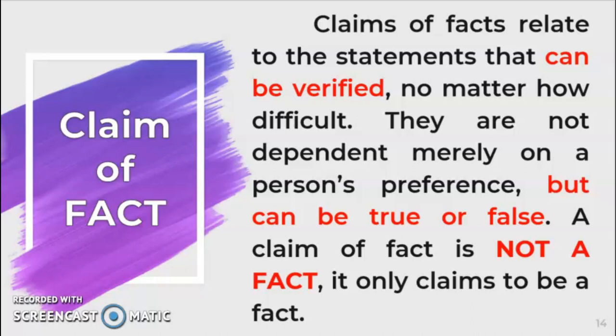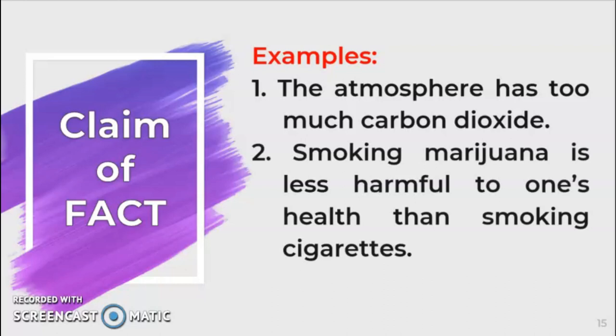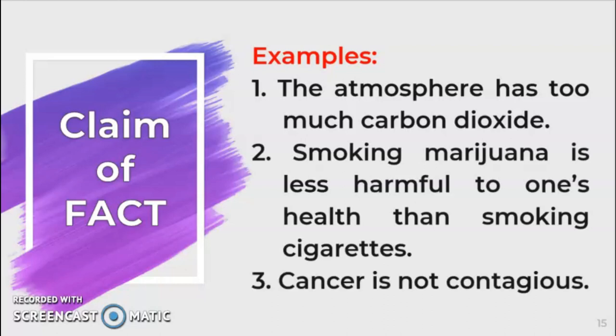Therefore, when we say claim of fact, it is an argument about a measurable topic — it asserts something has existed, does exist, or will exist, or debates whether it is true or false. Let's try to read the following examples. These claims can be refuted using events as proof, and the existence or non-existence of protocols may be discussed using specific incidences as evidence. Always remember that to support your claim of fact, you have to use factual evidence that is sufficient, reliable, and appropriate.